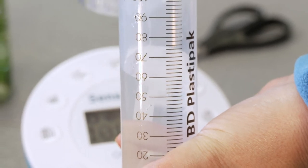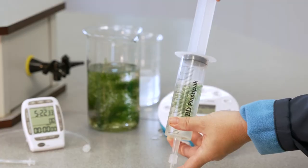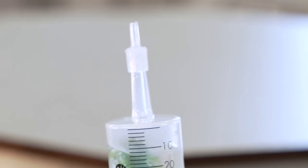Put the piece of pondweed in the water. Insert the plunger back inside the barrel of the syringe and leave about 10 milliliters of air in the syringe.